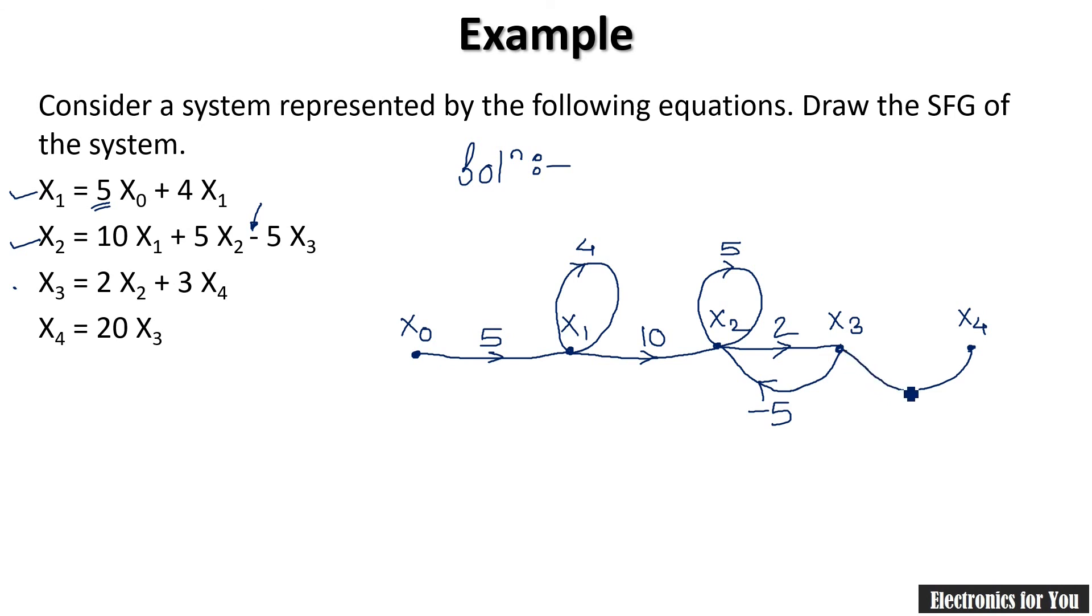You can draw a straight line, it is 3 times x4. Now x4 equals 20x3, means you are moving from x3 to x4 with the gain 20. So this is the respective diagram for our equations.